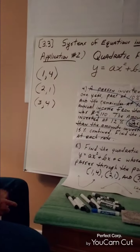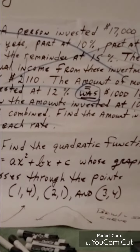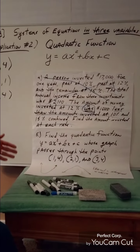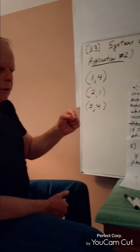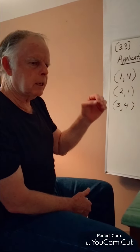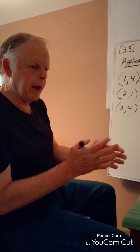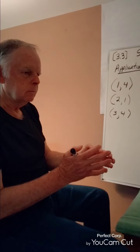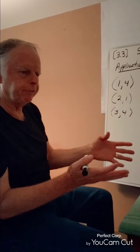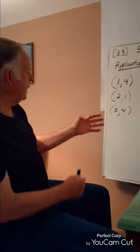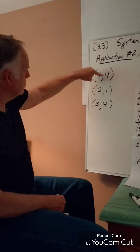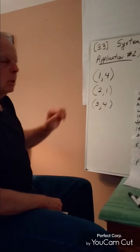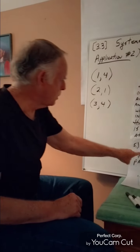It is asking us to come up with a quadratic function whose graph contains — in addition to many other points — these three specific ordered pairs. And y = ax² + bx + c is the model we're going to use.